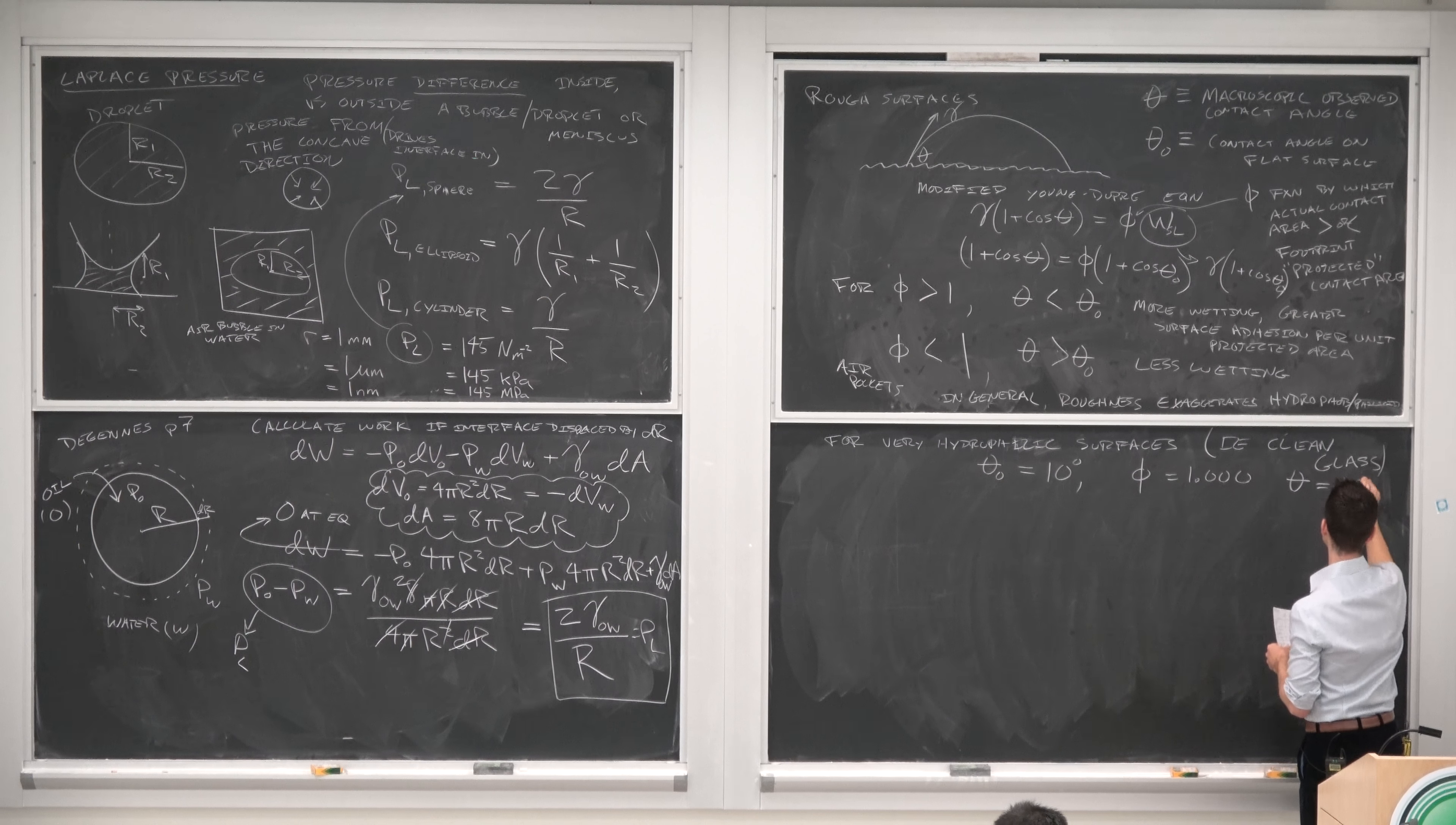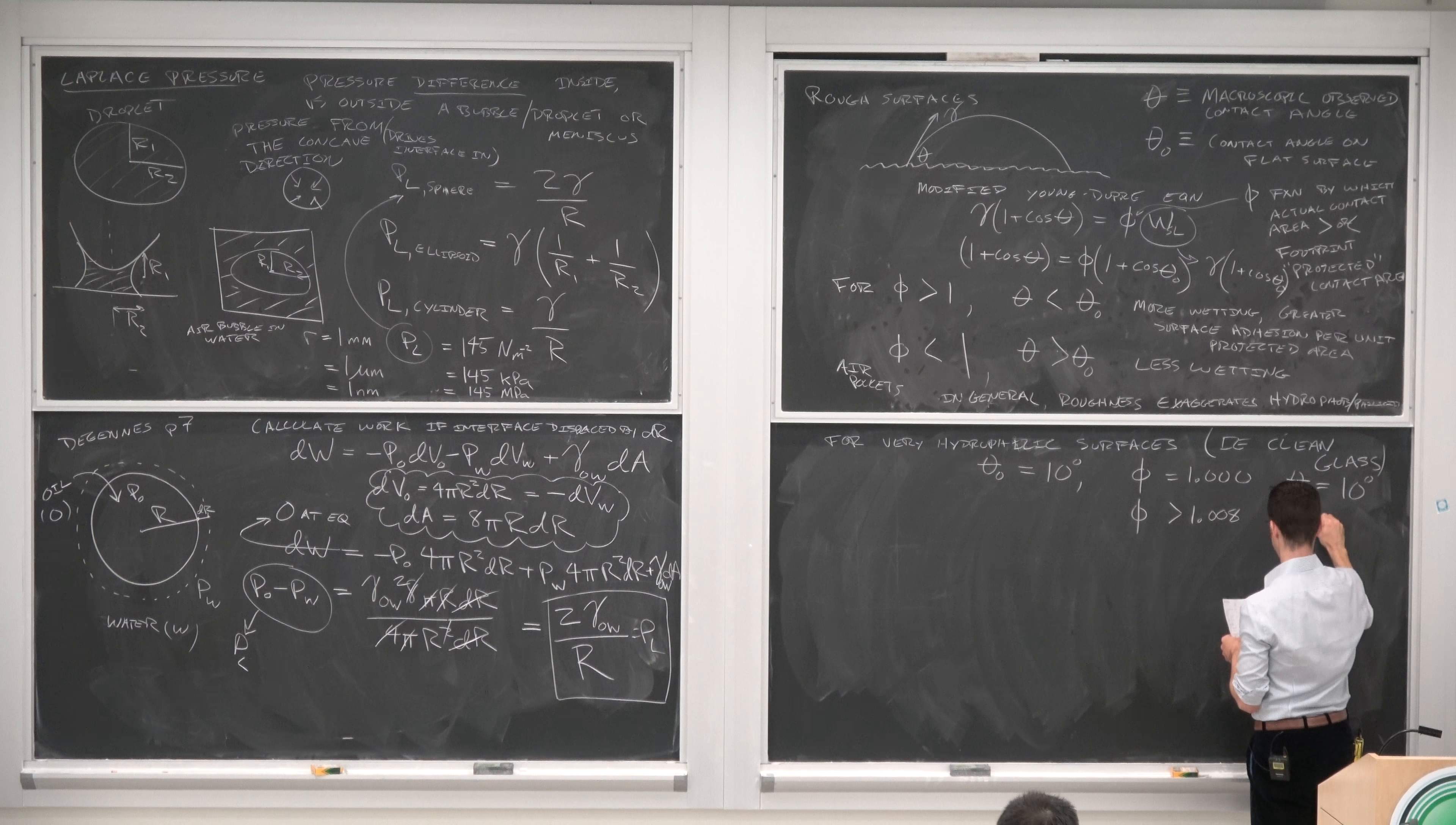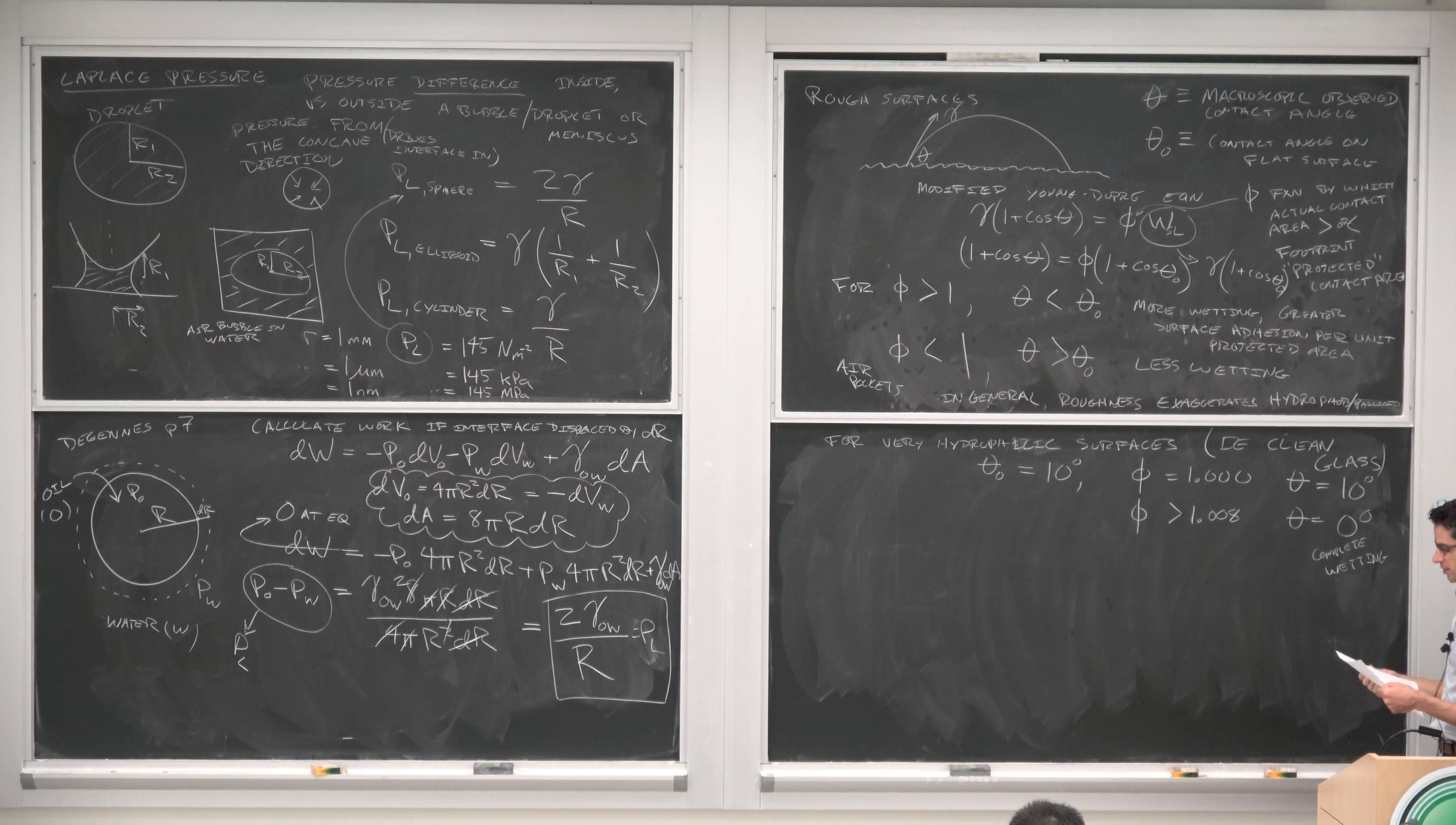But if we increase our contact area just by adding a little bit of roughness, 1.008, the observed contact angle goes down to essentially zero. This is complete wetting. The kid is really scared of the dark.